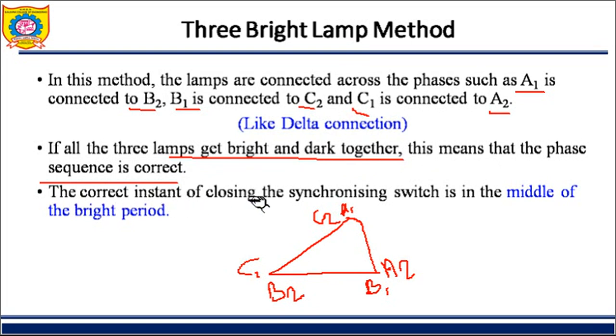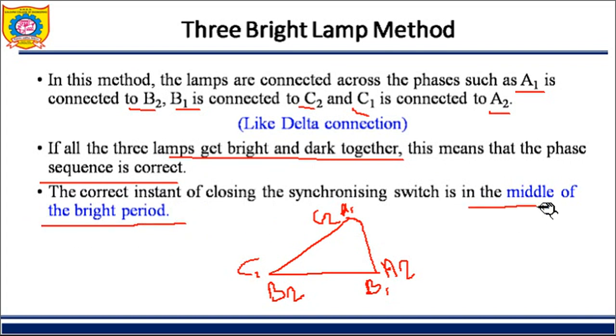The key difference here is that the closing instant is in the middle of the bright period, whereas previously in the dark lamp method it was the middle of the dark period. Now it is the middle of the bright period.